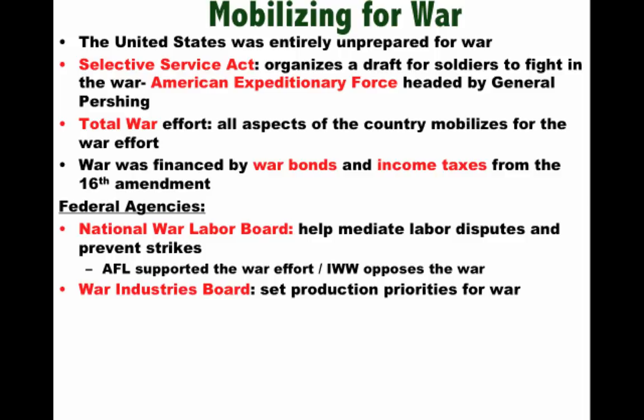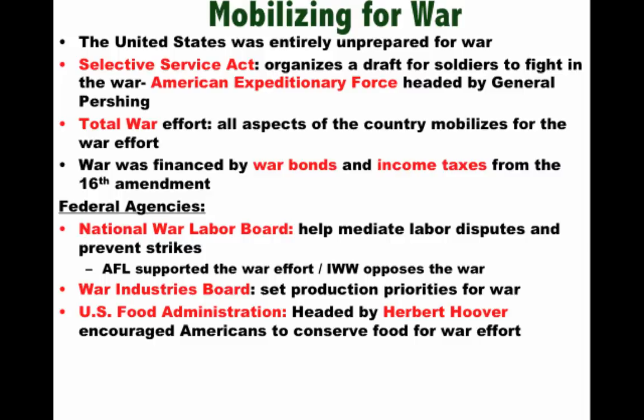Another government agency working with business was the War Industries Board. They would set production priorities for the war — allocating scarce resources, centralizing control over raw materials and prices so that the war could be won with efficient production. Another one you should know about is the U.S. Food Administration, headed by a future president, Herbert Hoover, which encouraged Americans to conserve food for the war effort so that there would be enough meat, sugar, and other supplies for soldiers on the battlefield.